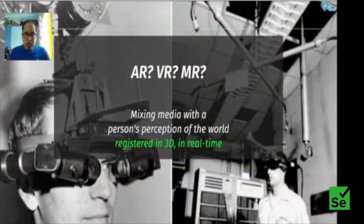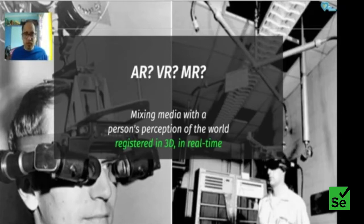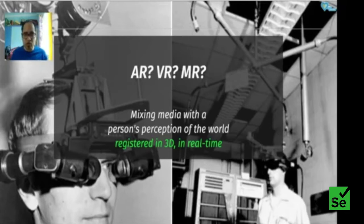Starting with a little bit of history — what is augmented and virtual reality? This concept is really not new. The picture you see here is Ivan Sutherland from the 1960s in his MIT lab, where he first envisioned what VR could look like. It's a whole-room contraption where you can walk around and it tries to mimic the features of the room in VR.